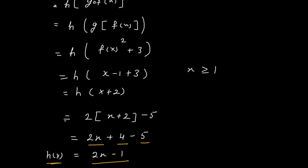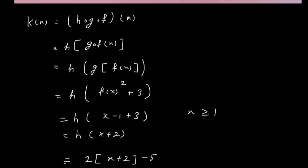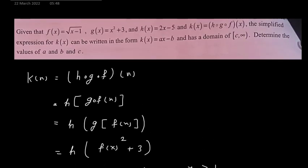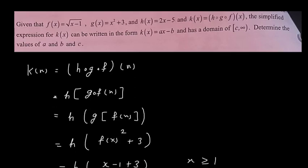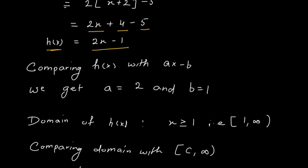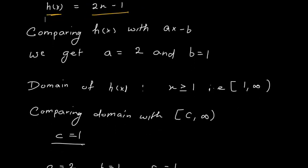Now domain. So here as there is a term root x minus 1, that indicates that x should be greater than or equal to 1. So from here I will understand that domain is x greater than or equal to 1. Therefore I can write this as 1 to infinity. Now if I compare this with c to infinity, I will get 1 equal to c.